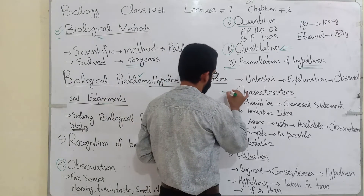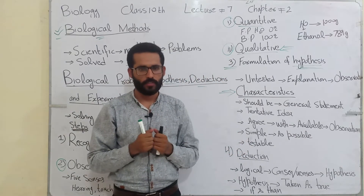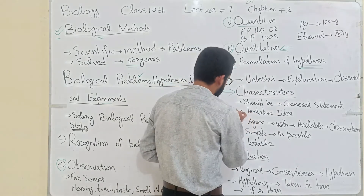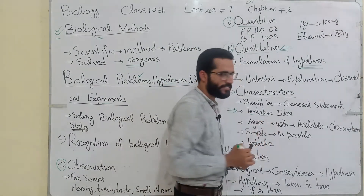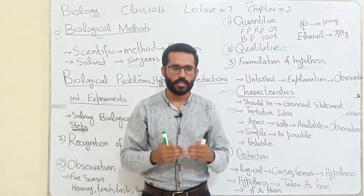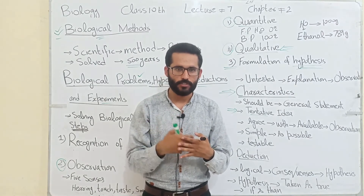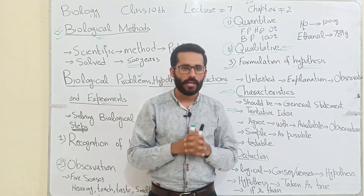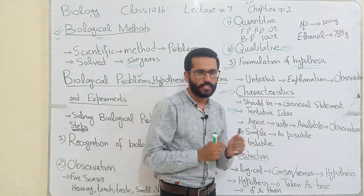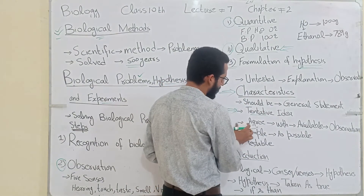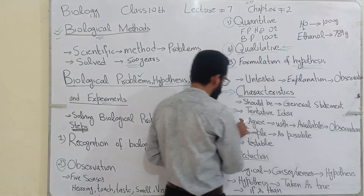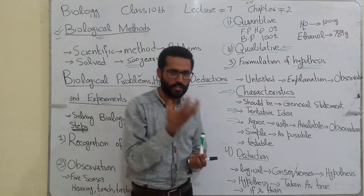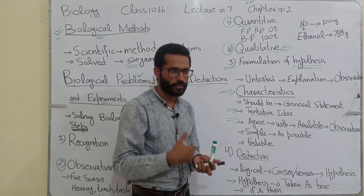Hypothesis has following characteristics: it should be a general statement. It should be a tentative idea — an untested idea — jis ko abhi hum ne experiment nahi lagaya hota. Jo scientist hota hai woh data ki base pe hypothesis de raha hota hai ya background knowledge ki base pe. Number second: it should agree with available observation — jo hamaari observation hoti hai, us ke saath yeh agree kar raha ho. Jo humne observe kiya, jo data collect kiya, us ke saath match ho raha ho.